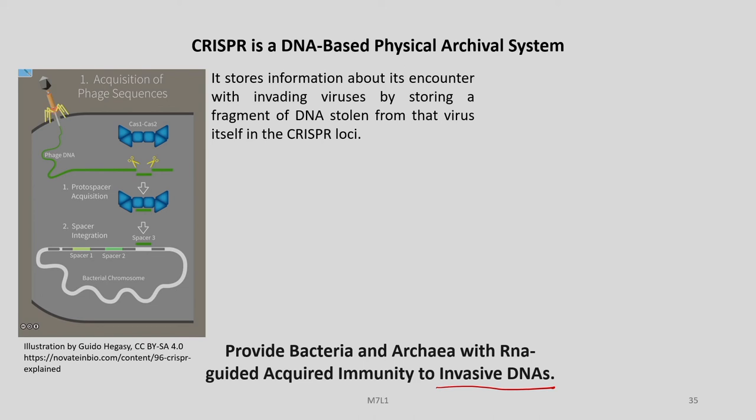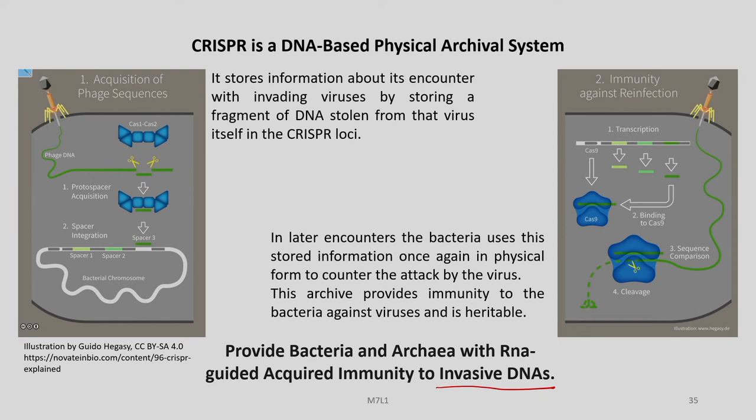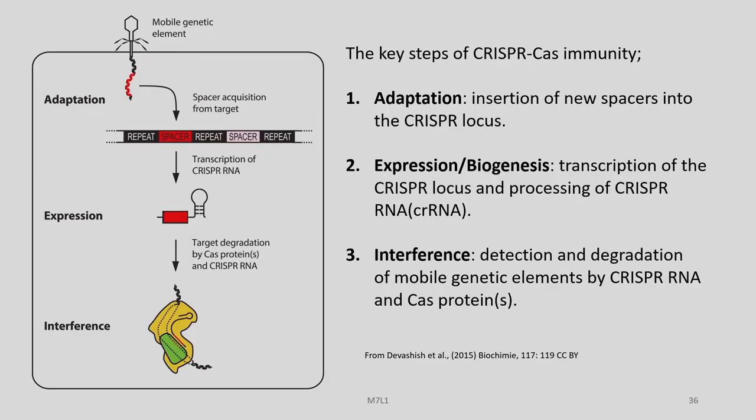There are a few important things about this acquired immunity. There has to be some kind of acquisition of the enemy DNA, which we already discussed earlier. In this acquisition of the first sequences or enemy sequences, there is storage of information about its encounter with the invading virus by storing a fragment of the DNA stolen from the virus itself into the CRISPR loci. In the immunity against reinfection phase, whenever a future virus attack occurs, the bacteria would use the stored information in physical form to counter the attack. This archive provides heritable immunity to the bacteria against viruses.